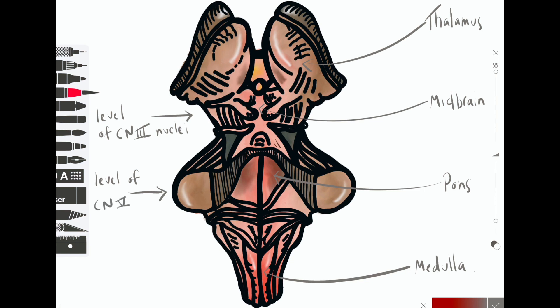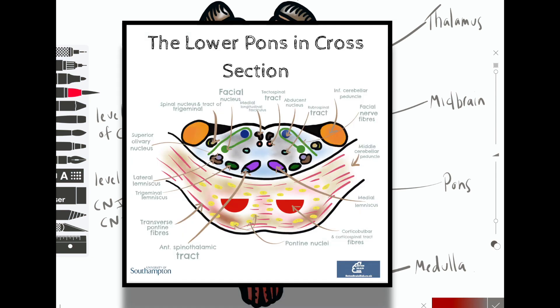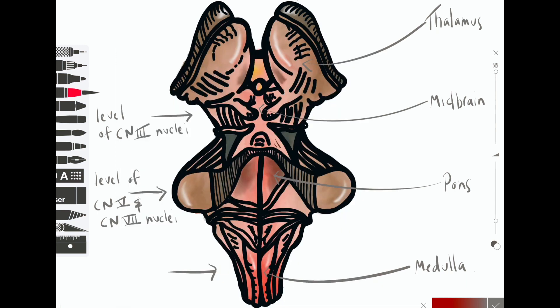The level of the pons is important for the corneal reflex because that involves both cranial nerve 5 and 7. The afferent limb is trigeminal and that will involve the chief sensory nucleus at the level of the pons and the motor nucleus of 7. The facial nerve is the efferent limb of the corneal reflex. That's absent bilaterally, suggesting a big problem with the pons.